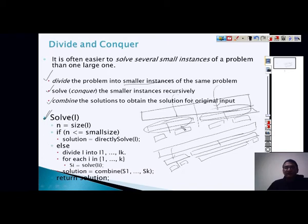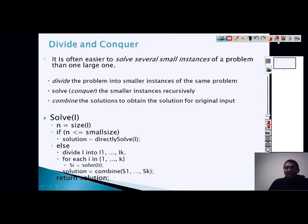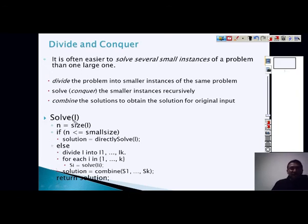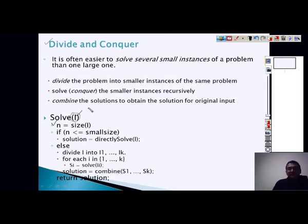Let's understand how we can apply divide and conquer to solve a problem. Here we assume that i is a problem and we are interested to solve it. First we find what is the size of the problem — let's say n is the size. We assume n is large; that is when we need to apply divide and conquer. If n is already small size, meaning the size which can be directly and easily solved, then we can directly solve the problem.